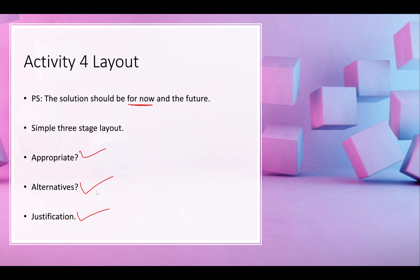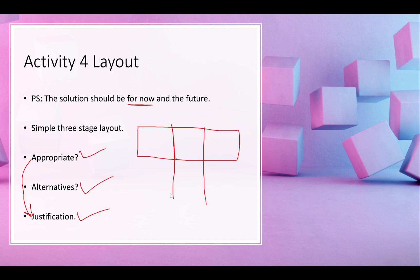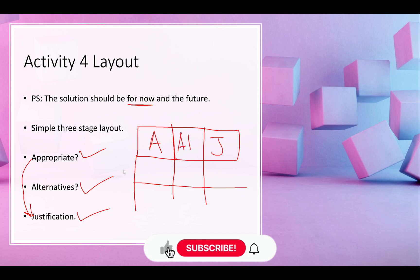Finally there's justification, which links into appropriateness. I'd keep three labels, essentially making a table split into three sections: the first is 'Appropriateness,' the next is 'Alternative,' and the final is 'Justification.' For each thing you speak about — let's say tablets — you explain why each criterion applies.